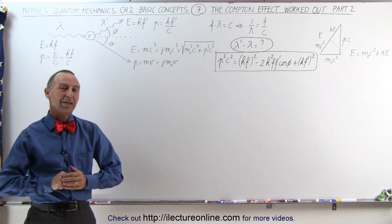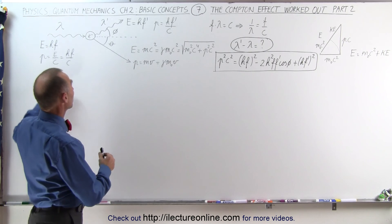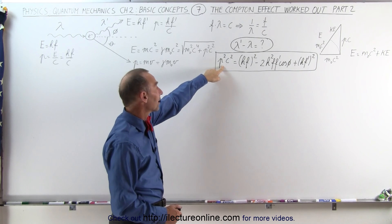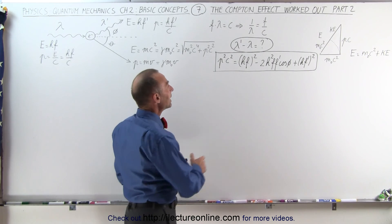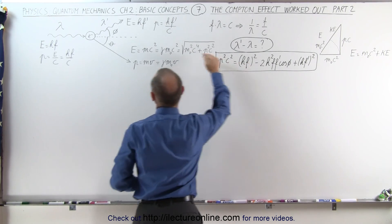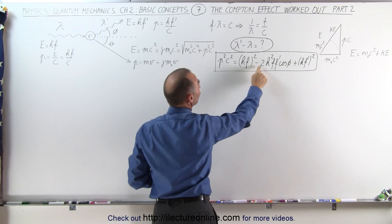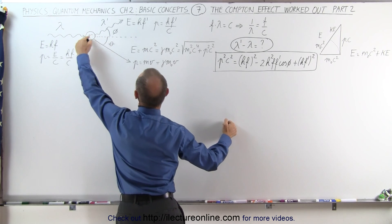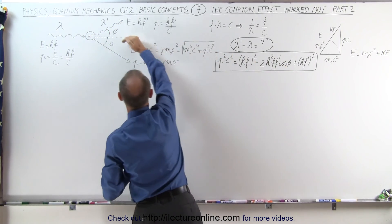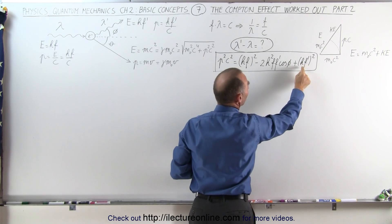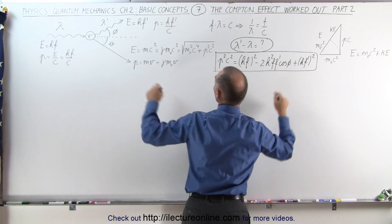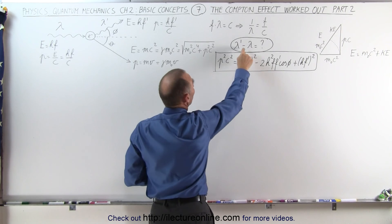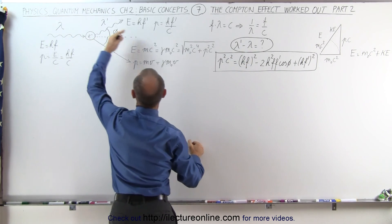Welcome to Electron Line. In the first part, we were able to use the conservation of momentum equation to come up with an expression for the product of the momentum of the scattered electron times the speed of light squared being equal to Planck's constant times the frequency of the incoming photon, quantity squared, minus twice Planck's constant squared times the frequency of the incoming photon multiplied by the frequency of the exiting photon, times the cosine of the scattering angle of the photon, plus the product of Planck's constant times F, the frequency of the scattered photon, quantity squared. That equation tells us the difference in the wavelength of the incoming photon and the exiting photon.